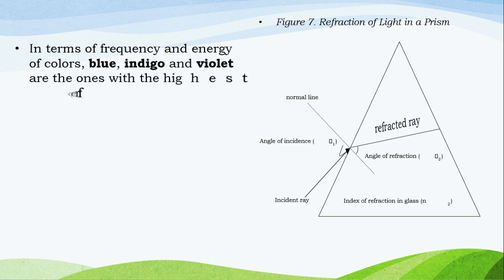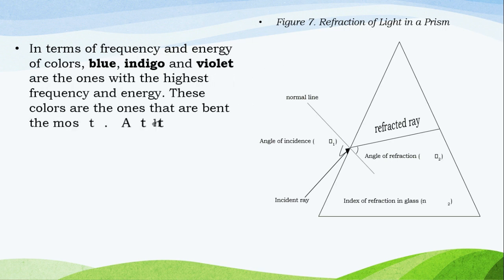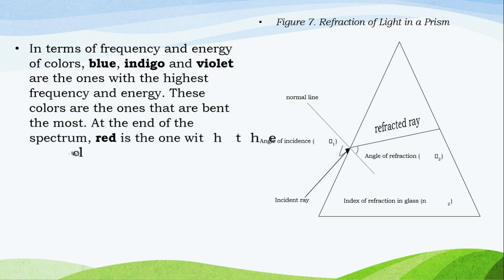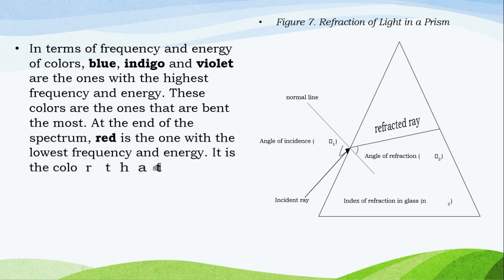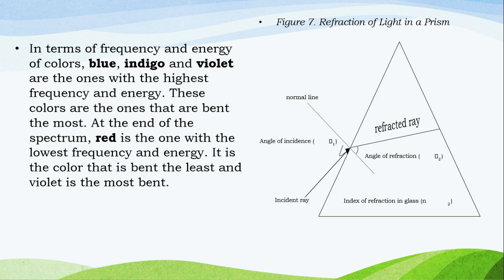Ang kapasok na sinag ay tinatawag na incident ray mula sa medium 1, at ang kalabas na sinag ay ang refracted ray sa medium 2. At ang magkaugnay na angles ay ang mga angle of incidence at angle of refraction. Kapag ang isang puting ilaw ay pumasok sa isang prism, ang paghihiwalay sa 7 magkakaibang kulay ay sinusunod. Ang refractive indices ng mga iba't-ibang kulay ng ilaw ay tumutukoy sa pagbiyahe sa iba't-ibang bilis patungo sa prism, kung saan nagmumula ang iba't-ibang degree ng pagbabaluktot.